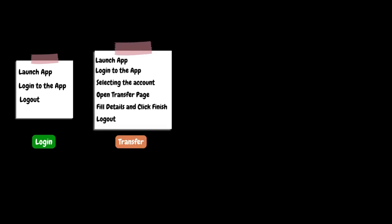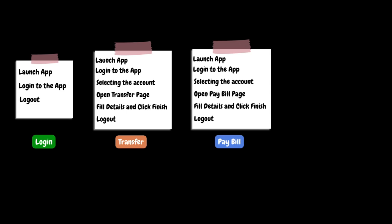Next, we have transfer functionality — transferring money between two accounts. The detailed steps are: launching the application, logging in using valid user credentials, selecting the account page, opening the transfer page, filling all the necessary details and clicking finish, and finally logging out. Next is pay bill — paying bills to registered payees. In this functionality as well, the user will launch the application, login with valid credentials, select the account, open the pay bill page, fill in all the required information, click finish, and then log out.